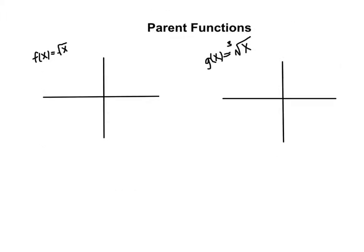The parent functions of each of these - we're going to be talking first about the square root function. So the parent function is f of x equals the square root of x, or y equals the square root of x, and passes through the points 0, 0 and 1, 1.